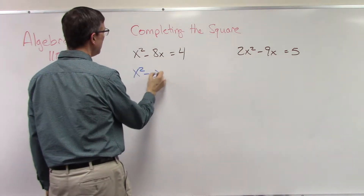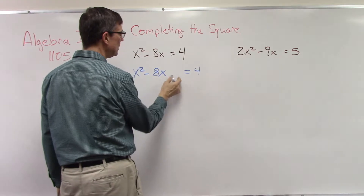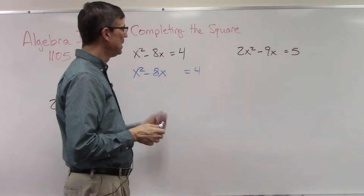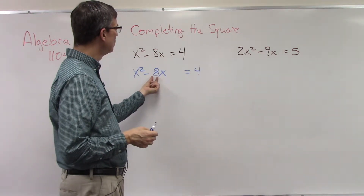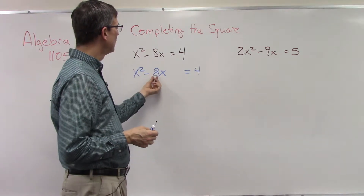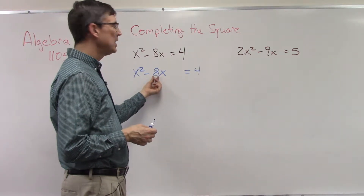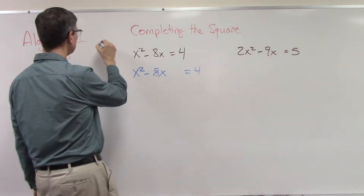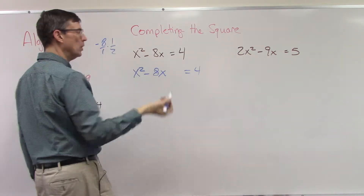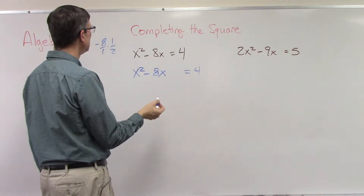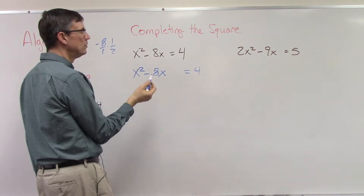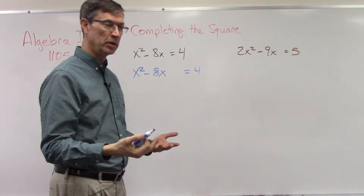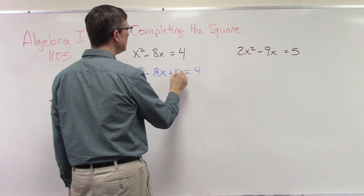We're going to take x squared minus 8x — I like to leave a space here. Back on pages 14 and 15 was an intermediate step where you take half of the middle term, the x term. Take half of that and square it. So what's half of negative 8? You multiply by one half to get negative 8 over 2, which is negative 4. But it's not negative 4 we're adding — it's negative 4 squared, which is positive 16.